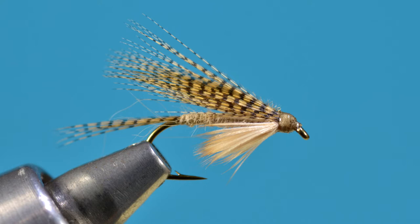This particular version is done on a number 12 wet fly hook. It can be done a little smaller than this, 14 maybe. I wouldn't go too much smaller than that for the wet version.